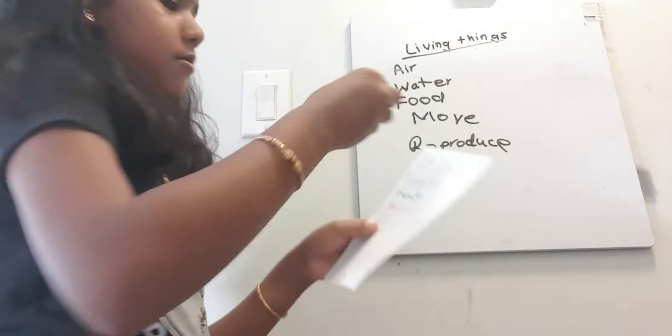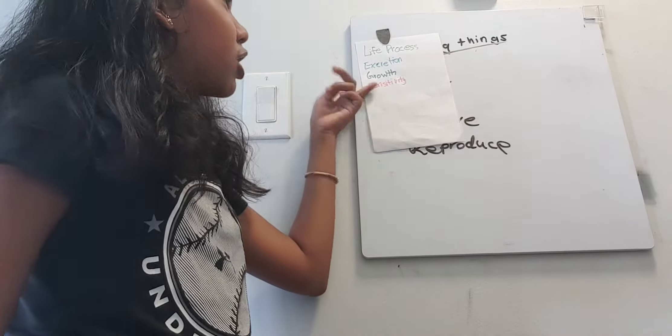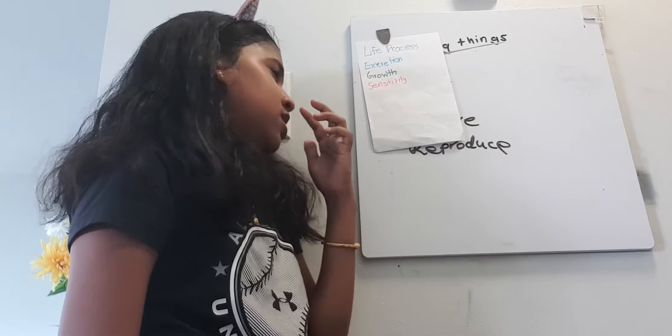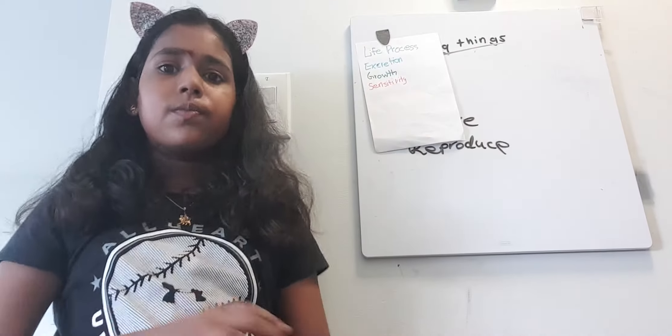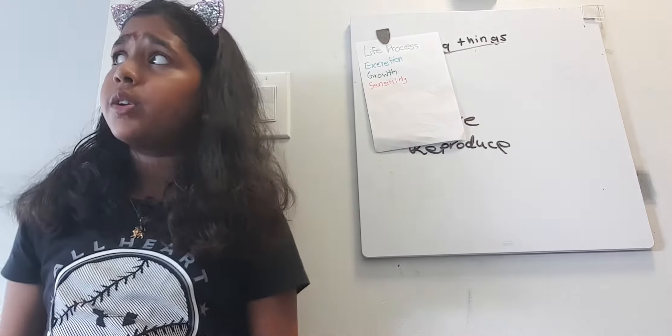These are the characteristics of living things: they have life processes, excretion, growth, and sensitivity. Life processes mean you basically grow — your height changes, your weight changes, everything changes. Excretion is your waste, like sweat. Growth is when you age up each birthday. Sensitivity is when you feel differences in your surrounding environment.